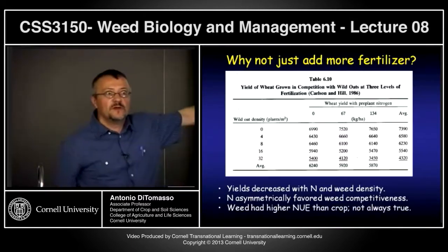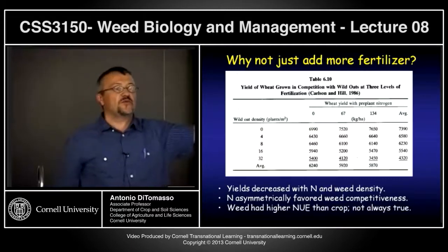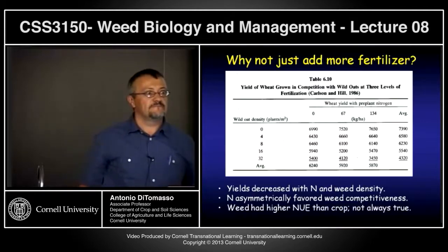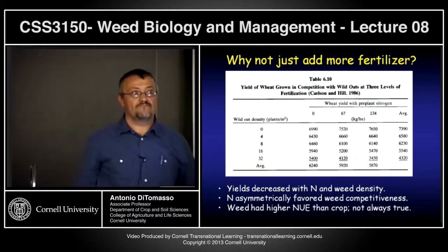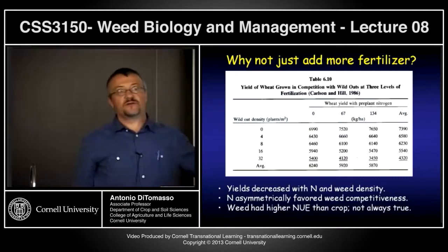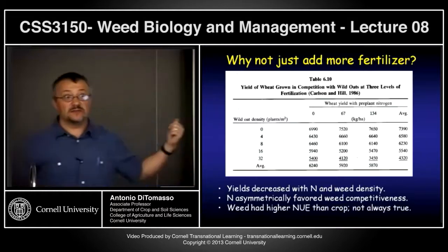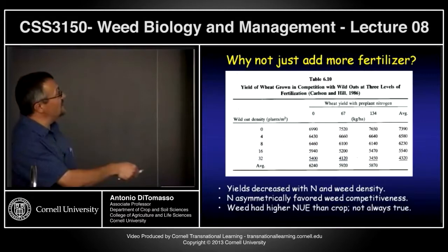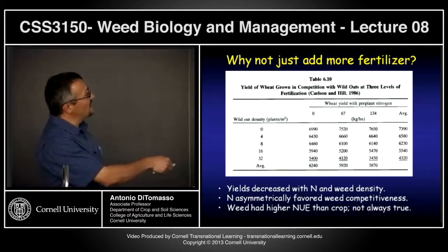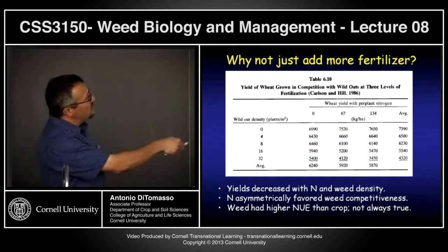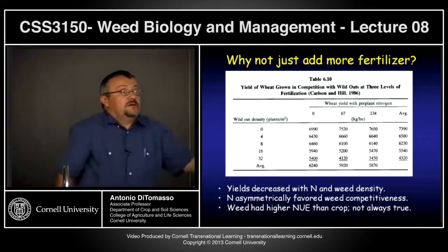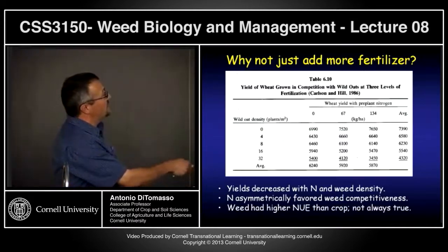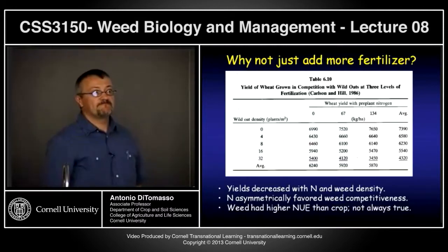If I showed you this on a prelim and asked you to explain the trends using principles from class, the answer is: wild oat is a much better competitor for nitrogen than wheat. As you increase density of oats, you get a yield decrease — that makes sense. But you're also getting a decrease in wheat yield as you increase fertility. Both density and fertility are working against you. You can't make this up by fertilizing; if you keep your weeds out, fertilization gives a nice increase.